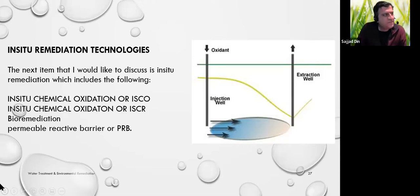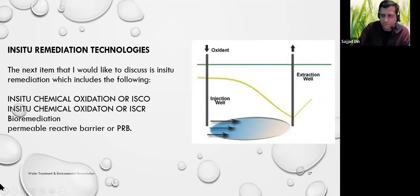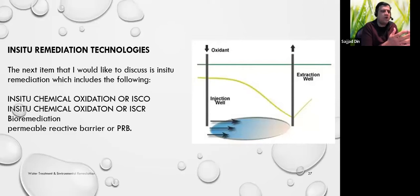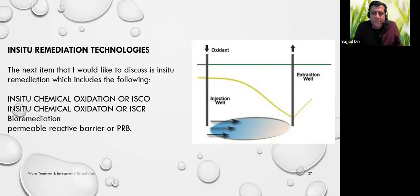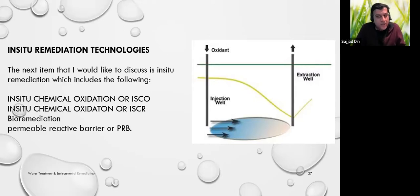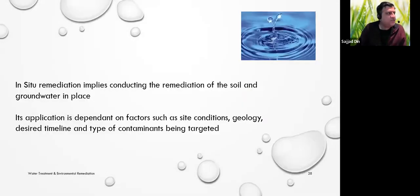The next topic is in-situ remedial technologies. In-situ means in place; ex-situ means taking it out of place — what we've been discussing so far was ex-situ. For in-situ, there are two main types: chemical oxidation (ISCO — In-Situ Chemical Oxidation) and chemical reduction (ISCR — In-Situ Chemical Reduction). We can also do bioremediation and install a permeable reactive barrier.